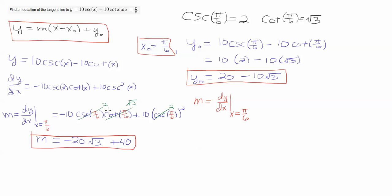Cosecant of pi over 6 is 2. Cotangent of pi over 6 is square root of 3. Cosecant of pi over 6 is 2, but 2 squared is 4. So 4 times 10 is 40. 2 times 10 is 20 times square root of 3, and the minus sign is there. So that's the slope.